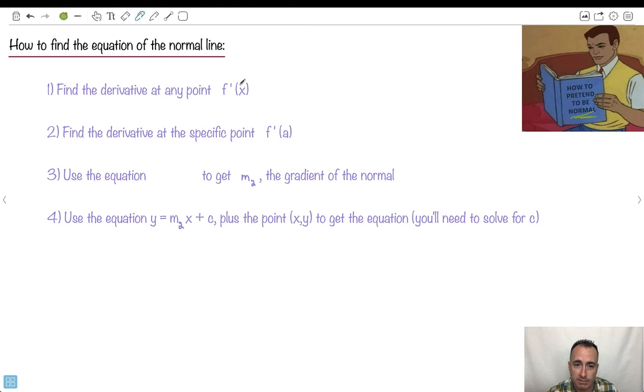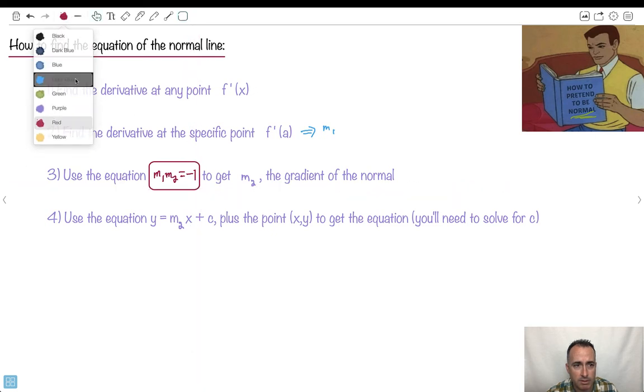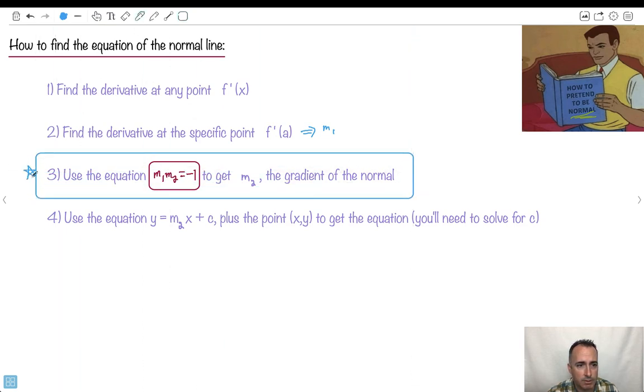Step one, find the derivative at any point. Still doing that. Step two, find the derivative at the specific point. Now the only difference is this is going to give you what I'm going to call m1. You're going to use an equation. This is a new thing that we're going to add. You're going to use this equation right here: m1·m2 = -1. This is something maybe worth memorizing. This is the extra step. This is the gradient of the tangent.